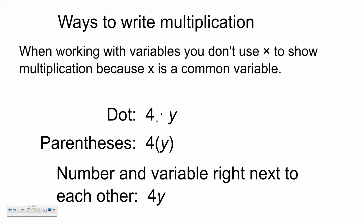The first one that we'll often use is the dot. 4 dot Y means 4 times Y. Or parentheses. 4, parentheses, Y, with no symbols between them, means 4 times Y. It's the same as using the X, but it doesn't get us confused in wondering if X is a variable or not. The final way is actually one of the easiest and the most common. You just simply have the number and variable right next to each other with no symbols in between. 4Y means 4 times Y.